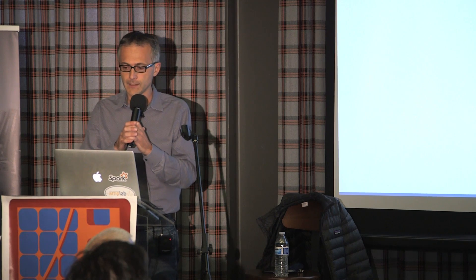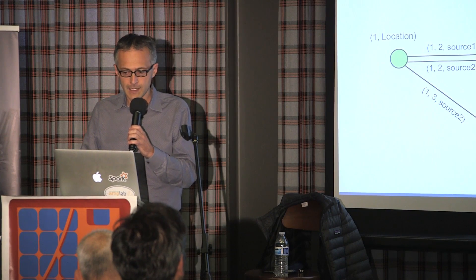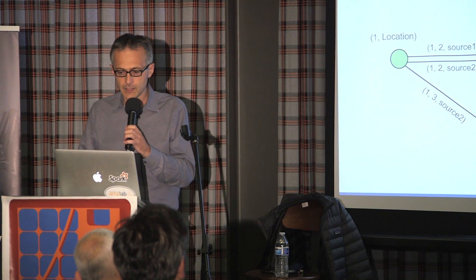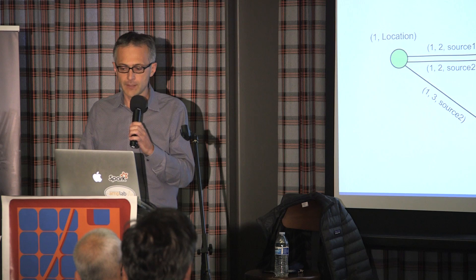GraphX models a property graph, which is an attributed multi-directed graph. Multi-directed essentially allows parallel edges or relationships across the same source vertex and the same destination. Attributed means that vertices — also called nodes — and edges can have attributes. Here I'm showing a simple graph with three vertices: a location, a domain, and a font vertex, with three edges linking them. It's multi-directed because we have two edges linking location and domain, allowing us to show that two sources provide the same website link.